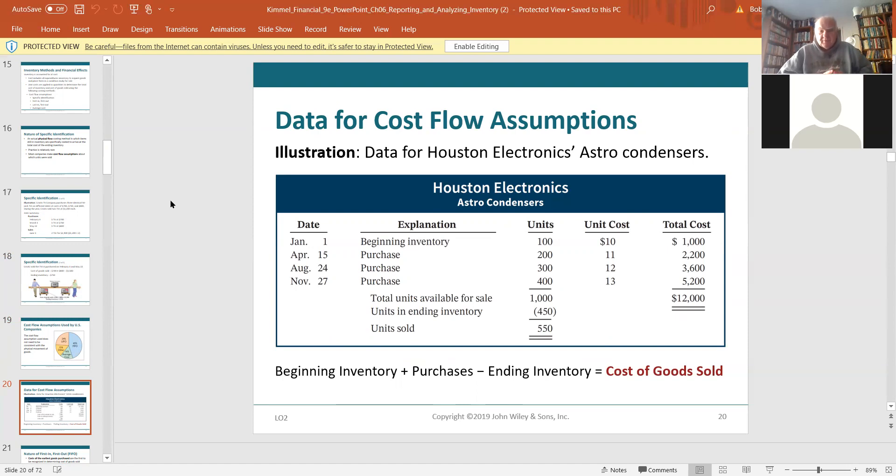Data for cost flow assumptions. Let's take a real good look at this. This is your template for doing your homework, for doing your problems here. You're going to lay out the beginning inventory, 100 times 10, and then in chronological order, you're going to list the purchases. You're going to add them down, multiply across, and you're going to come up with the available for sale. The available for sale. At the end of the month, they're telling you that they had 450 left in the inventory. So we did not sell 450. What did we sell? We sold 550. The difference between the $1,000 and the $550 or the $450.